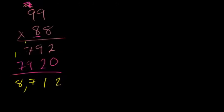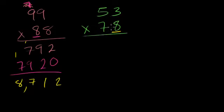Can't do enough of these. 53 times 78. I think you're getting the hang of it now. Let's multiply 8 times 53 first. 8 times 3 is 24, stick the 2 up there. 8 times 5 is 40, 40 plus 2 is 42.